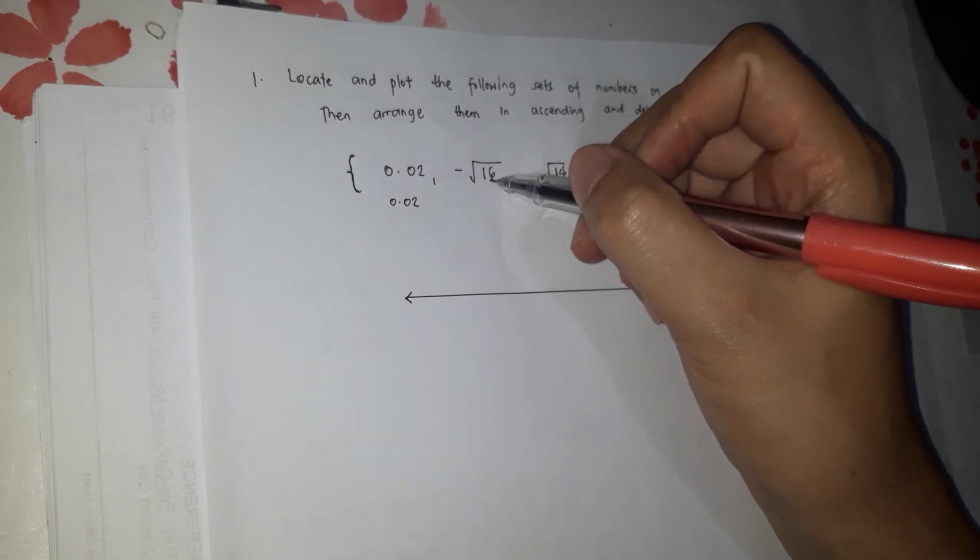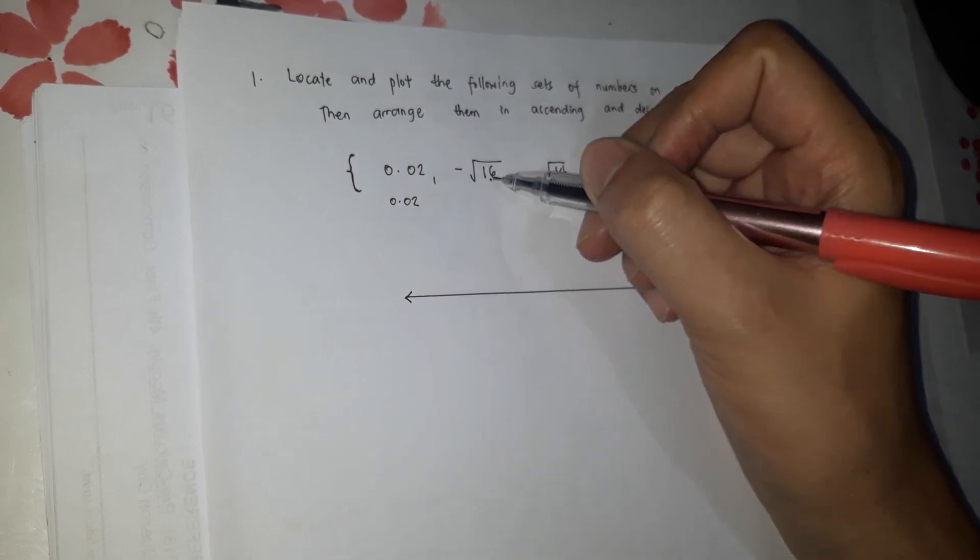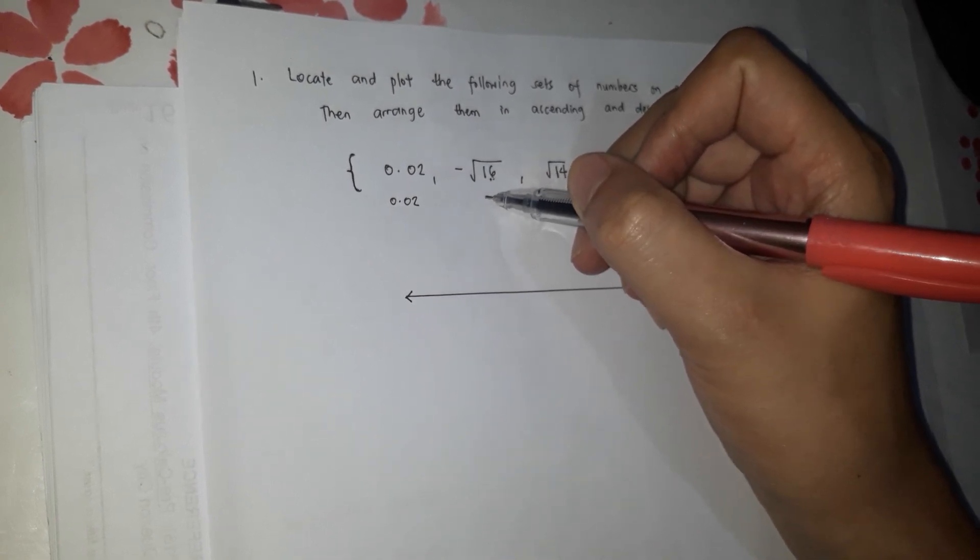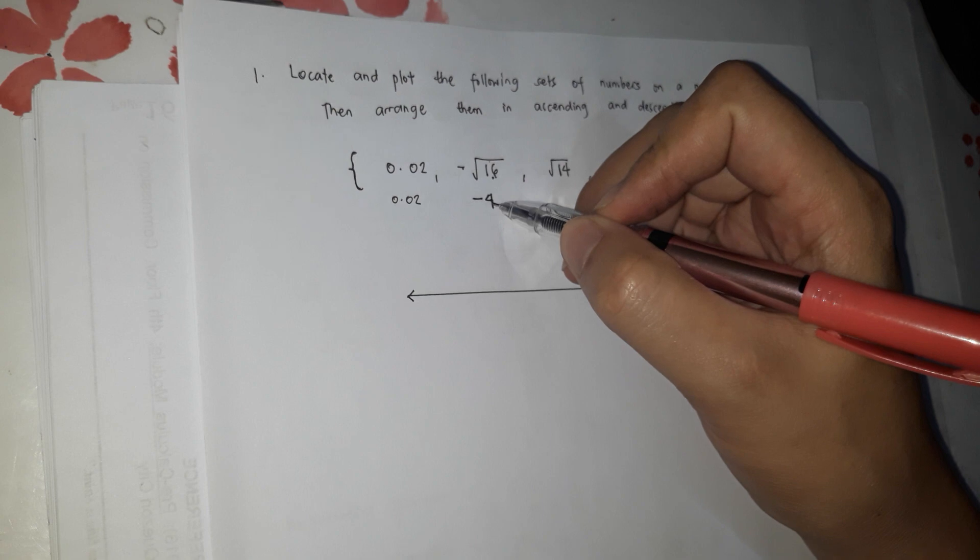Negative square root of 16 — what number, when multiplied by itself, gives 16? That's 4 positive, so negative square root of 16 equals negative 4.